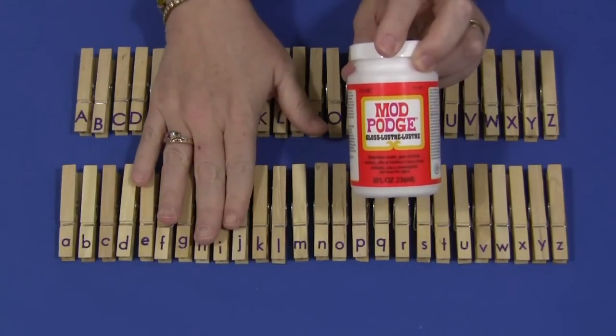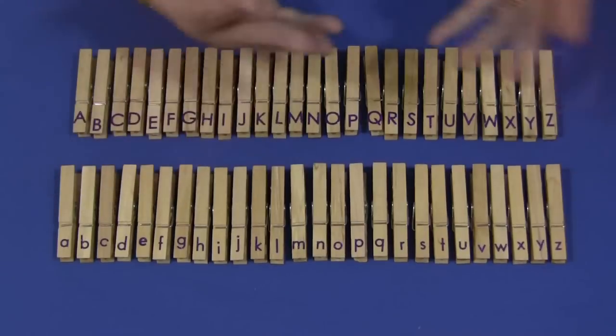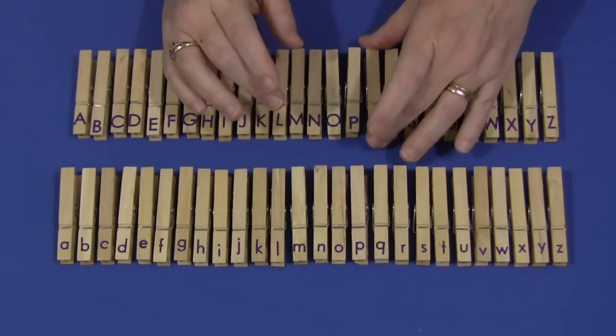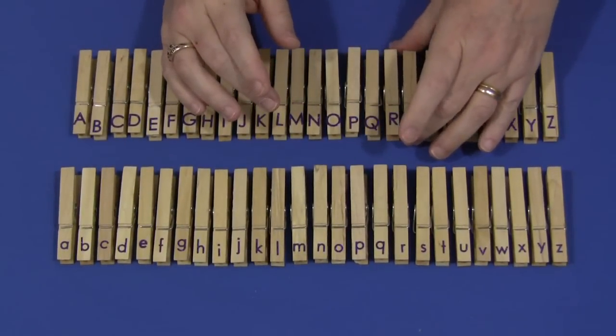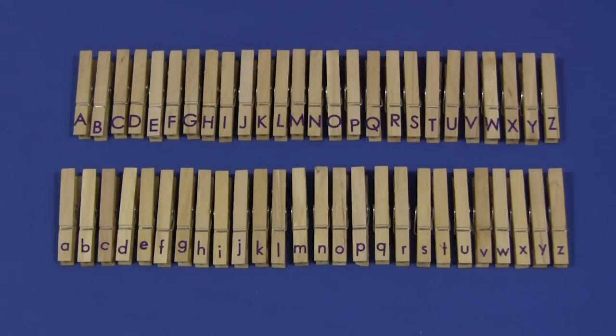And then what we do with these clothespins is we put them on clotheslines in alphabetical order, we put them around bowls, which we already did a video of that, and we use them for matching activities, which my next video that you'll be seeing shortly will be about using them with matching cards or letter cards.